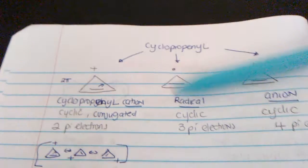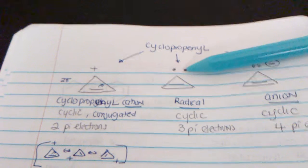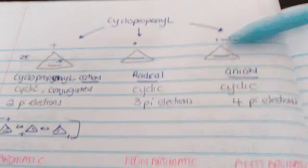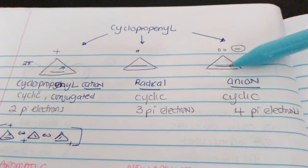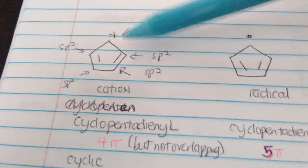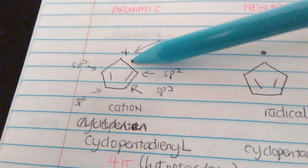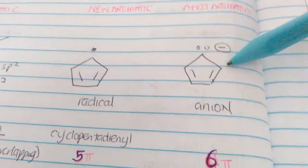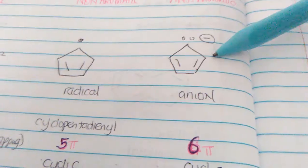A cyclopropenyl radical has 3 electrons — an odd number that produces a decimal when plugged into 4n + 2 — so radicals are non-aromatic. The cyclopropenyl anion has 4 electrons — anti-aromatic. For cyclopentadienyl: the cation has 4 electrons and is anti-aromatic; the radical has 5 electrons and is non-aromatic; the anion has 6 electrons, satisfying 4n + 2 with n = 1, and is aromatic.